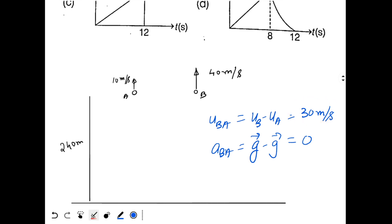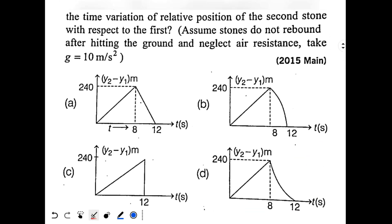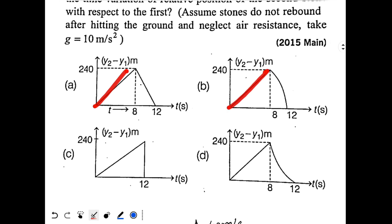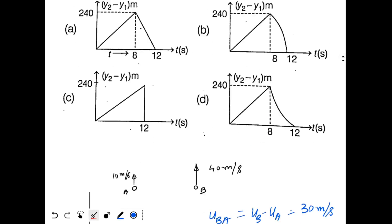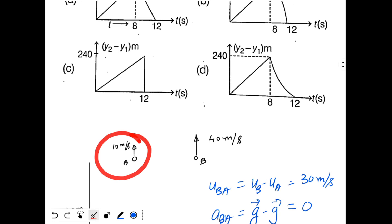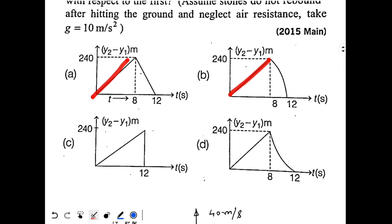So with respect to stone A, B is going with constant velocity. So the graph should be straight line. And that is why you can see the first section of all the 4 graphs is a straight line. And since the stone A remains in air for 8 seconds, the straight line graph should be only for 8 seconds. So here we have 8, 8 and 8. So option C will be wrong. So our answer will be one of these three graphs.